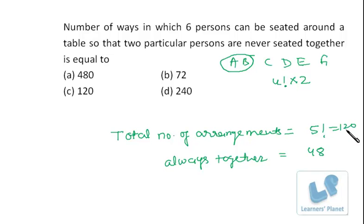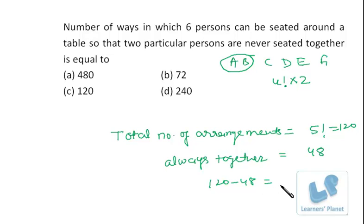The total arrangements are 120, and the arrangements when they are always together are 48. So in the remaining cases they will never be together. That gives 120 − 48 = 72 ways when they are never together.